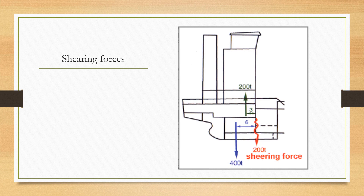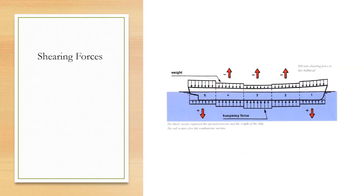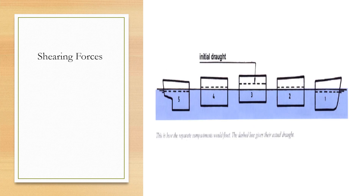Longitudinal forces occur because the weight of the ship or the weights within the ship are not homogeneous in the fore-and-aft direction — they are not of the same quantity or weight. They also occur because the upward force differs due to the shape of the underwater body. Because the underwater body's shape varies along the length of the ship, the force of the water acting on it also varies along the ship's length. In the diagram you can see black arrows representing the upward pressure and weight of the ship, while red arrows give the resultant per section.